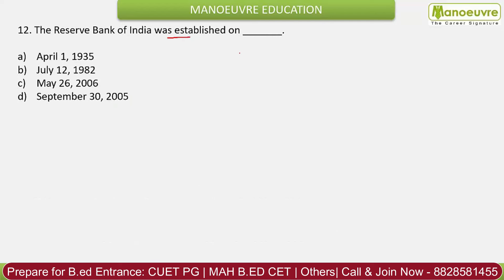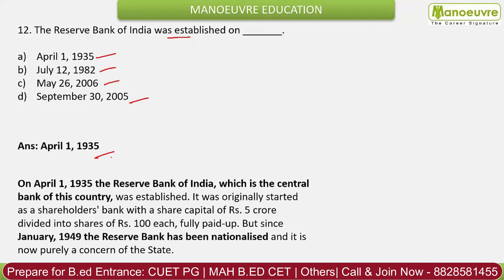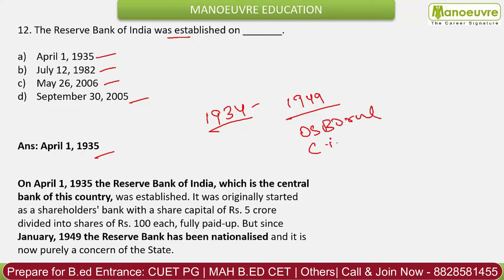Question 12: The Reserve Bank of India was established on? Options: 1st April 1935, 12th July 1992, May 26th 2006, September 30th 2005. The correct answer is 1st April 1935. RBI was established through the RBI Act 1934, and was nationalized in 1949. The first governor was Osborne Smith. The first Indian governor was C.D. Deshmukh. The current governor is Shaktikanta Das.